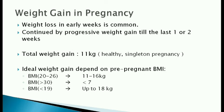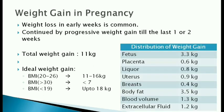Whereas an underweight woman may be allowed to gain up to 18 kg. The total weight gain at term is distributed approximately as follows: Fetus 3.3 kg, Placenta 0.6 kg, Liquor or amniotic fluid 0.8 kg, Uterus 0.9 kg, Breast 0.4 kg, Body fat 3.5 kg, Blood volume 1.3 kg, and extracellular fluid 1.2 kg.